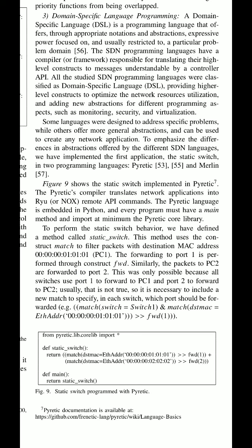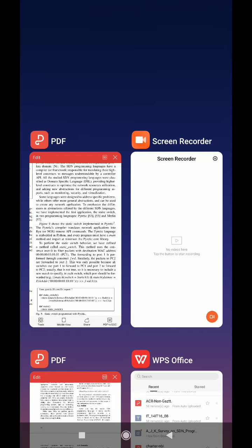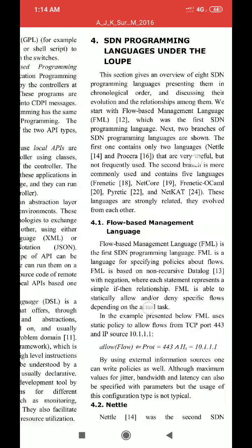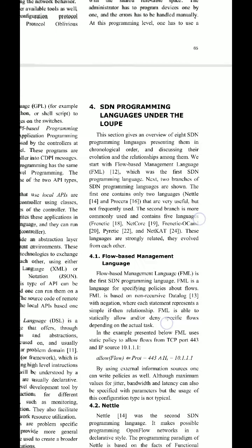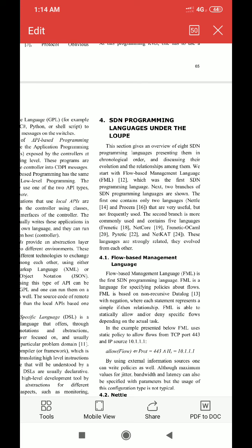The domain specific languages are basically: FML, which was the first SDN programming language. Next, two branches of SDN programming languages — NetTel and Procera — and the second branch is Frenetic, NetCore, OCaml, Pyretic, NetCat. Currently there is also a programming language P4 being used by the Open Network Foundation. P4 is a programming language for controlling packet forwarding planes in networking devices such as routers and switches.